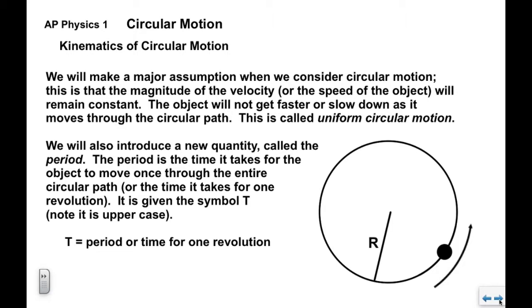We're going to make a major assumption when we look at circular motion: the magnitude of the velocity — in other words, its speed — will remain constant. The object is not going to get faster or slower as it moves through its circular path. We call this uniform circular motion. The term 'uniform' refers to the speed, or the magnitude of the velocity.